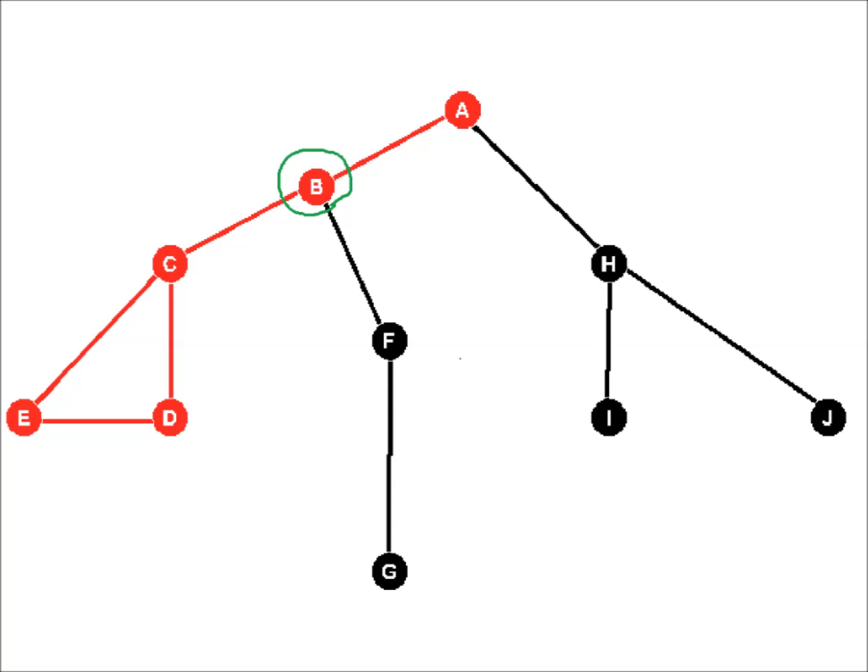We backtrack to B, from which we can reach F. We visit F, and from F, we can visit G.